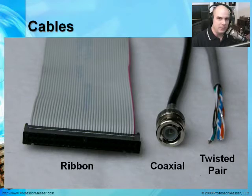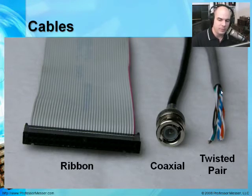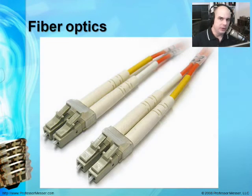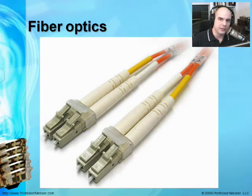Networking cables — you'll see these twisted pair wires all the time. What I did was strip off the end of an ethernet cable so you could see what's inside. Some of the newer types of cables you'll see, especially in a data center, are fiber optic cables. These days they're even pulling fiber optic cables all the way to your house with certain cable systems.